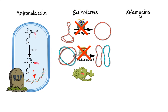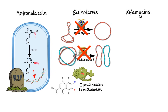The vast majority of quinolones in clinical use are so-called fluoroquinolones, which have a fluorine atom attached to the central ring system that increases their antimicrobial activity. Examples of fluoroquinolones are ciprofloxacin, levofloxacin, moxifloxacin, norfloxacin, and ofloxacin.